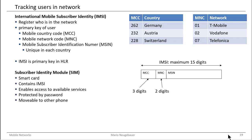The other component is the Subscriber Identity Module, the SIM. The SIM card is a smart card you put in your smartphone, and it contains the MSIN. Therewith, the mobile phone is able to identify itself in the network, and the authentication and authorization process can be started. The mobile station then has access to the services for which the contract is made with the mobile phone provider.